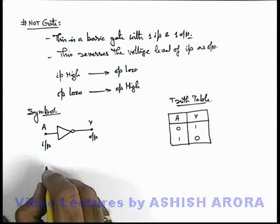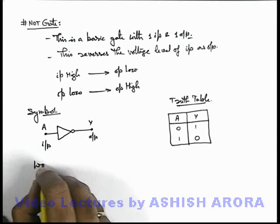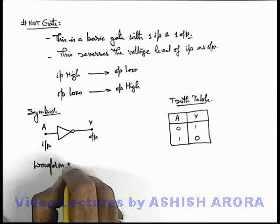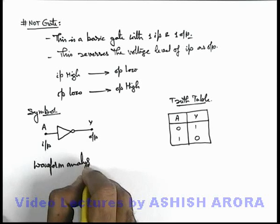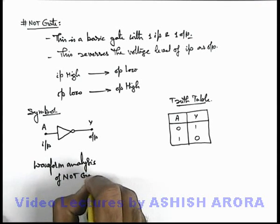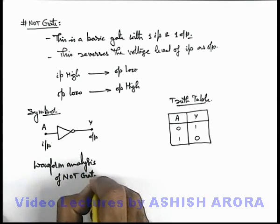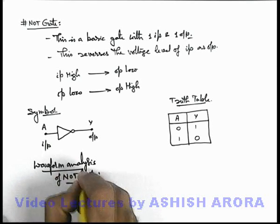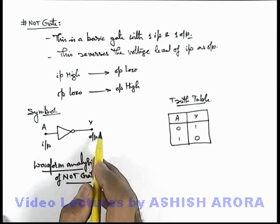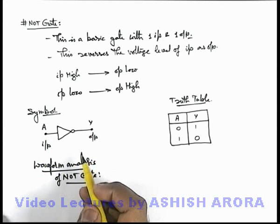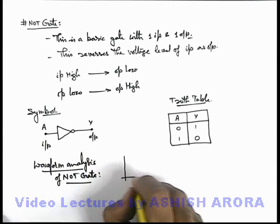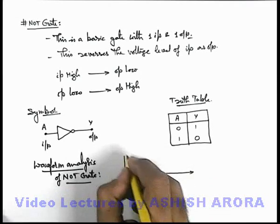The same we can express in the form of waveform analysis of the NOT gate. That is, explaining that if a signal waveform is applied at input A, what kind of waveform will be generated at Y — we can easily understand this with the help of the truth table and logical analysis.